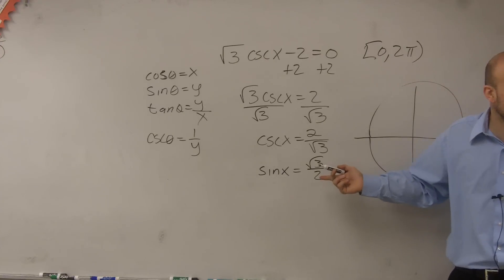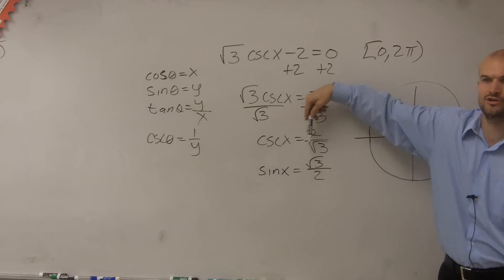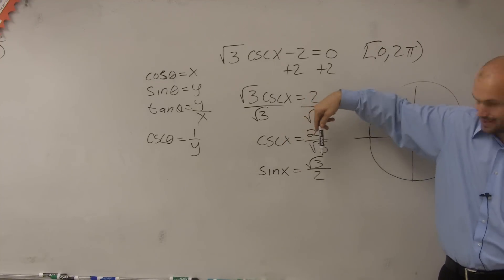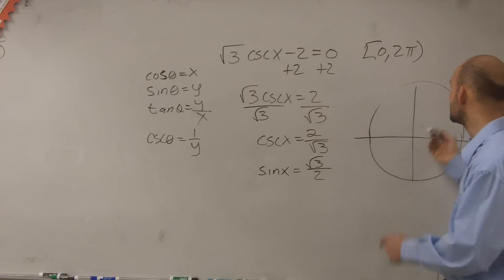Does that kind of make a little sense? And now that's a lot easier to do, right? Because now we know, oh, what values of x are equal to when the sine value, which is y, is equal to the square root of 3 over 2. And that's a little bit easier from what we learned. So therefore, now we just need to figure out when is sine square root of 3 over 2. Well, there's two points.